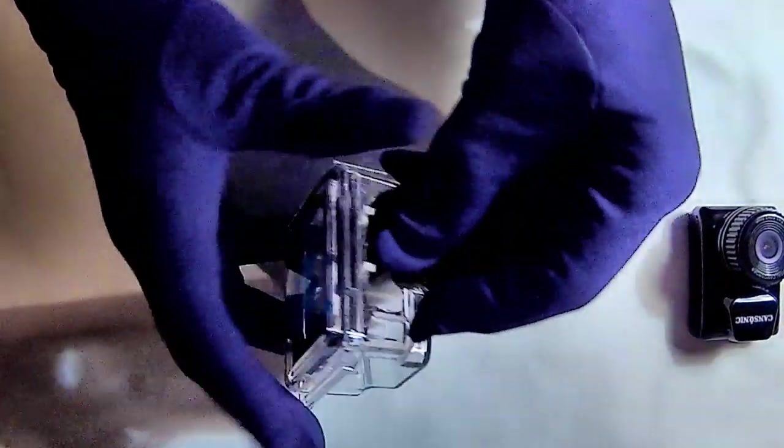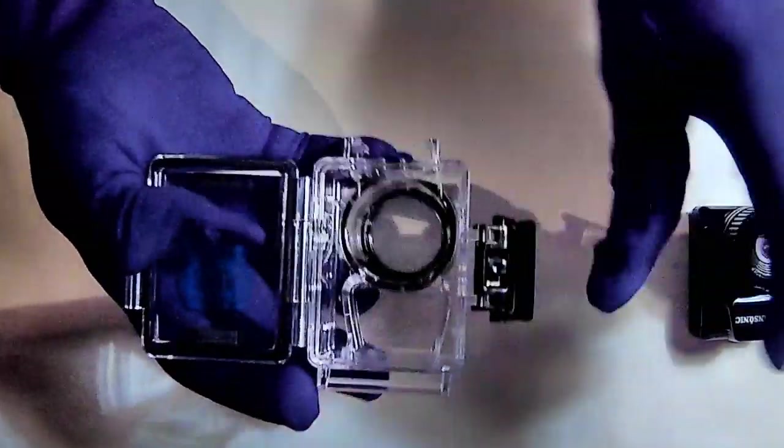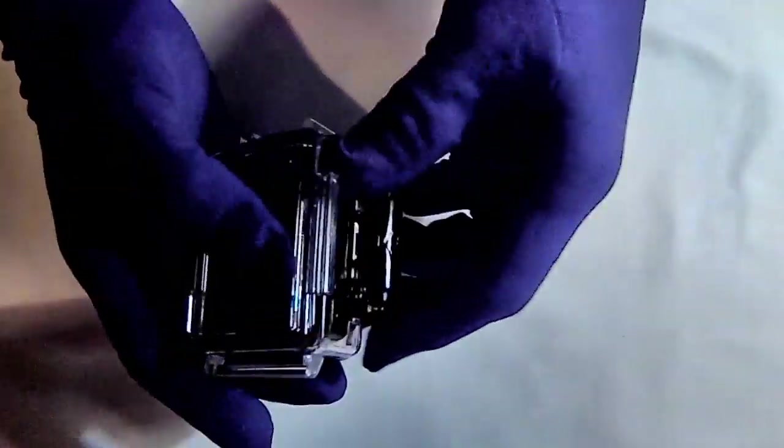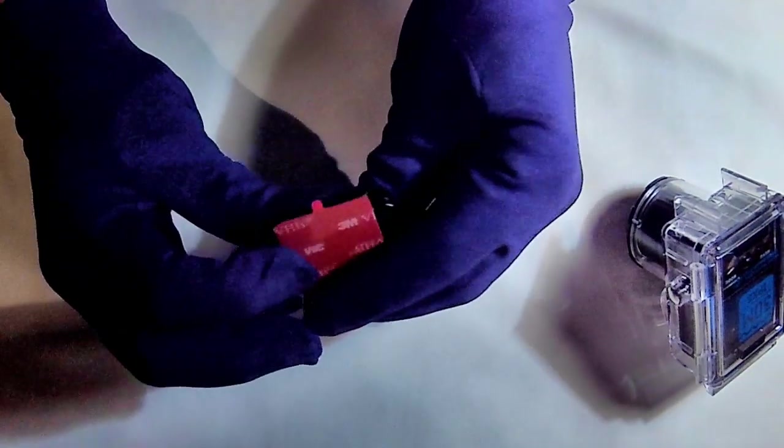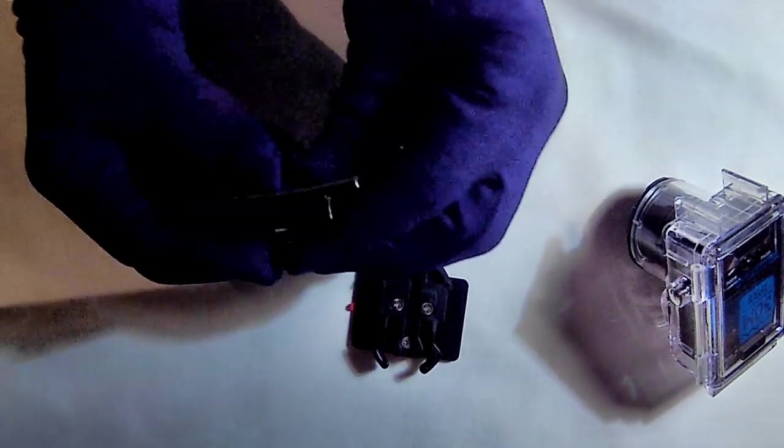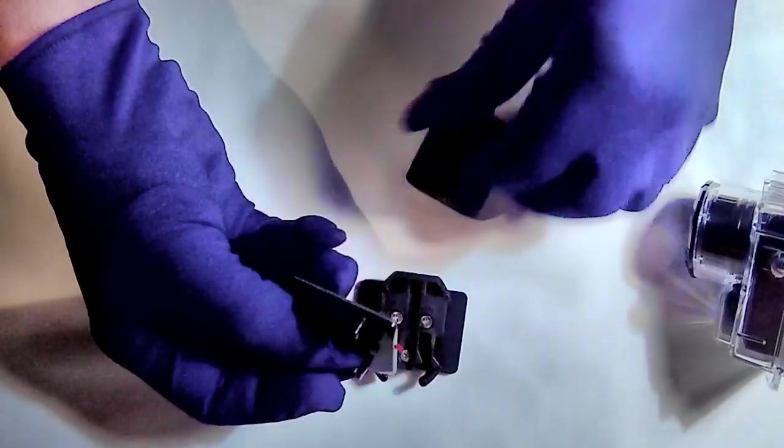The unit comes with a waterproof housing up to 30 meters underwater. You can place your camera in here, clips down nicely. And now you start with the attachments. Our unit comes with an attachment for a flat surface, an attachment for a curved surface, all the necessary attachments for helmets, for example. This is all included in the package.